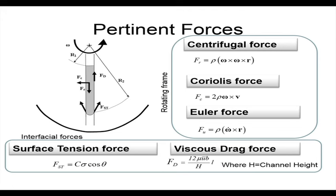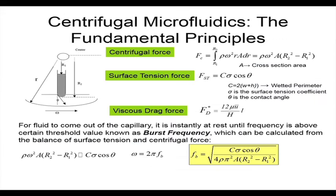Based on these forces we can revisit the burst frequency. The relevant forces are centrifugal force, surface tension force, and viscous drag force. Drag force does not come into the burst frequency calculation because at burst frequency the fluid just starts flowing and there is no viscous force prior to that. So burst frequency is calculated from the balance of centrifugal force and surface tension force — the same result we earlier interpreted in terms of a pressure gradient.